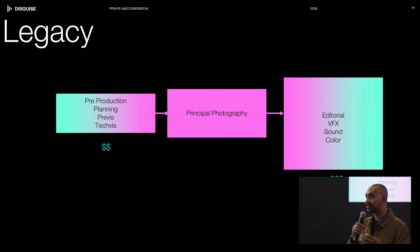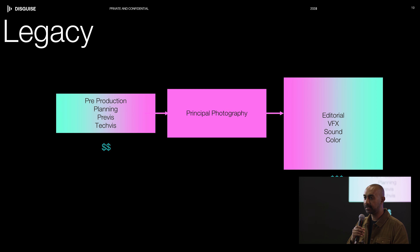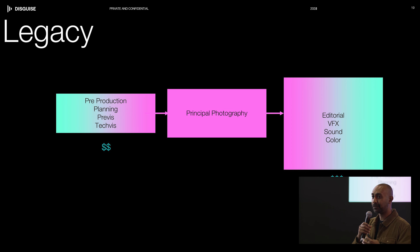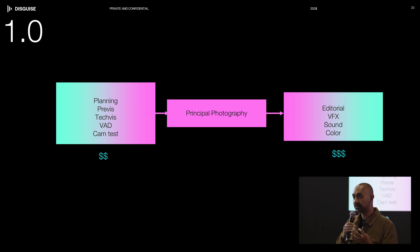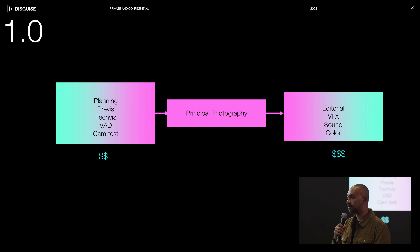Post-production could be six months or a year — this is where the majority of the money and time is spent, because that is where you get script blocks, iterations, changes, and reshoots. During VP 1.0, we initially asked studios to change that paradigm: make more commitments up front, invest in more creative decision-making, lock the script, and figure out your creative before going into principal photography.